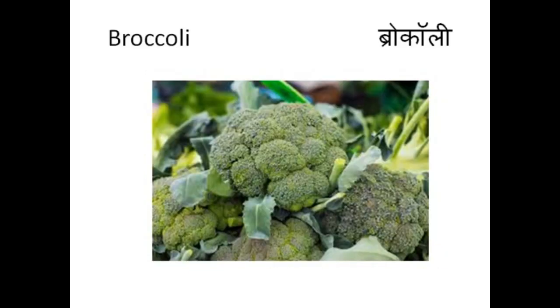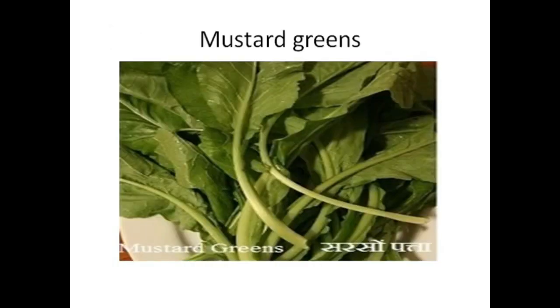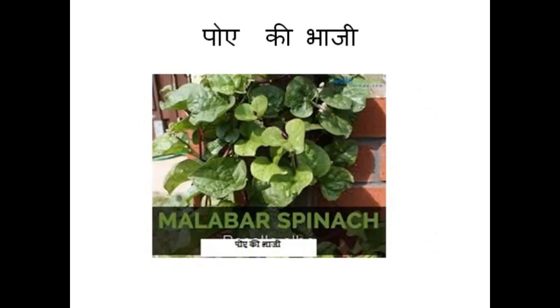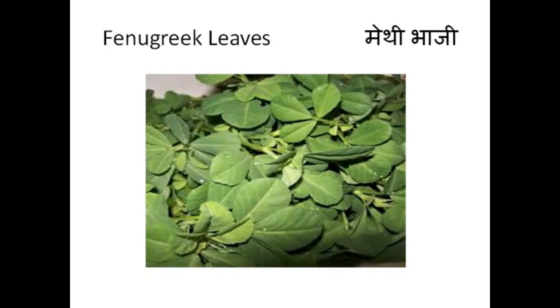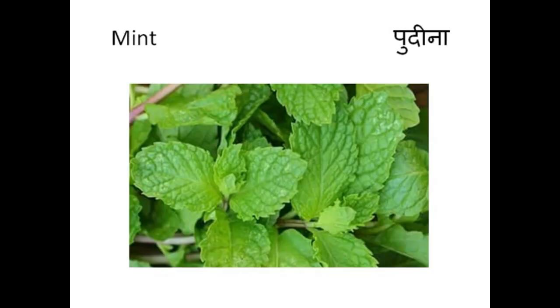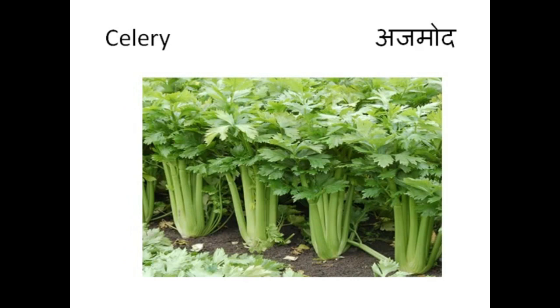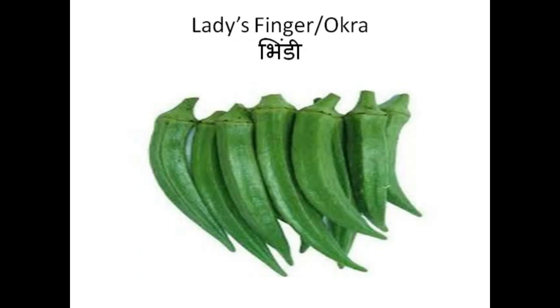Broccoli — broccoli is called broccoli. Mustard greens means sarso ka patta. Pumpkin means kaddu aur kumhra. Poe ki bhaji means malabar spinach. Fenugreek leaves means methi ki bhaji. Mint means pudina. Celery means ajmood. Lady's finger or okra means bhindi.